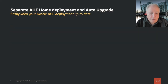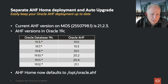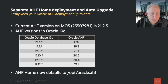Let's get started with the separate AHF home deployment and its auto upgrade capability. Many of you know that it's best practice to keep Oracle AHF up to date. However, that has always been somewhat of a problem because we don't necessarily ship with the most current version in GI and database distributions. The current AHF version is 21.2.3, available from MOS at the referenced note. However, the AHF version depending upon which 19 release you are deploying varies significantly, all the way from 19 to 21.1.